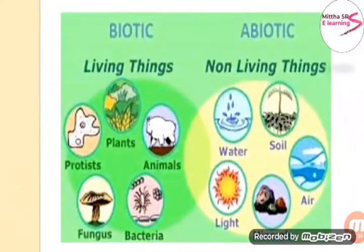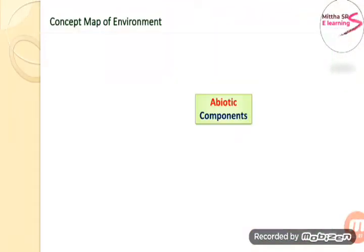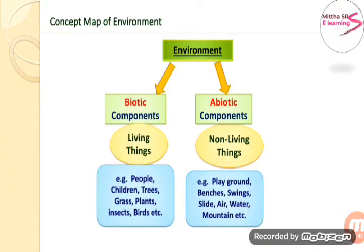Some examples of non-living things are shown in this picture. The concept map of environment shows that environment consists of two components: one is biotic and another is abiotic. Biotic components are living things — examples include people, children, trees, grass, plants, insects, birds, etc. Abiotic components are non-living things — examples include playground, benches, swings, slide, air, water, mountain, etc.